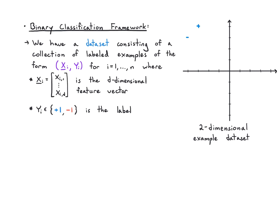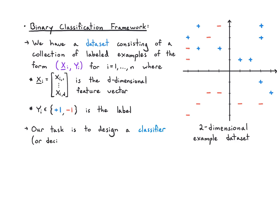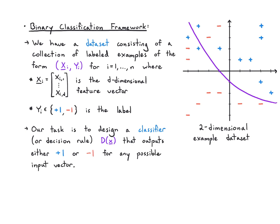Here's an example dataset in two dimensions with pluses and minuses. I'd like to come up with a rule for distinguishing where to say plus and where to say minus. I need a classifier — a decision rule — which we'll call d with input x_vector that outputs either +1 or −1 for any possible input. We need to divide up this space into plus and minus regions.